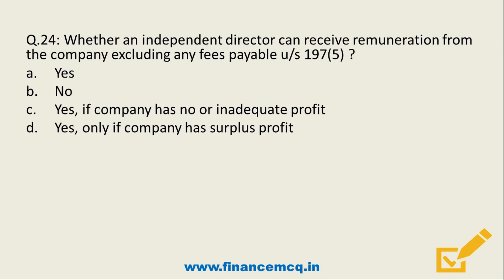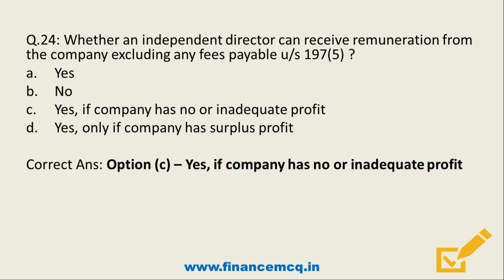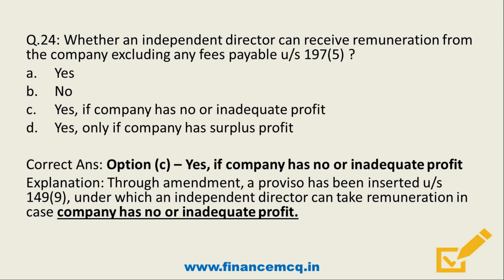Question 24. Whether an independent director can receive remuneration from the company, excluding any fees payable under section 197(5) for board meetings etc.? Options: option A yes, option B no, option C yes if company has no or inadequate profit, option D yes only if company has surplus profit. The answer is option C — yes, if the company has no or inadequate profit. Through this amendment, a proviso has been inserted under section 149 under which an independent director can take remuneration when the company has no or inadequate profit. This is a very important point for your exam.